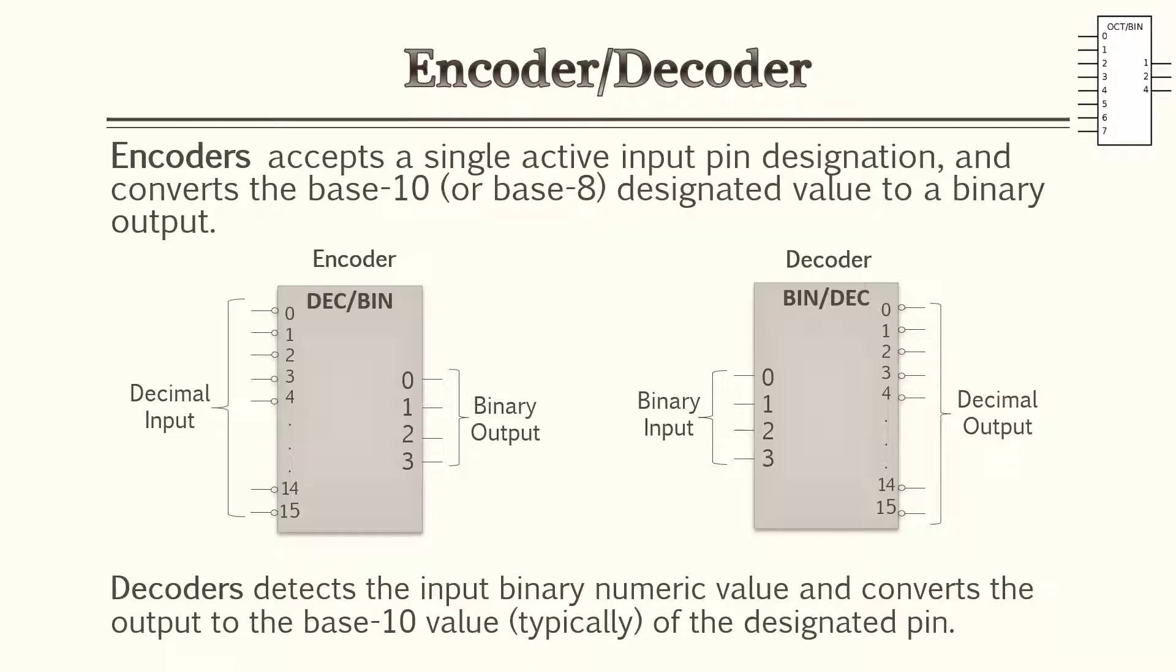If you look in the illustrations in the middle, we have an encoder and a decoder. An encoder has approximately 16 pins. And whichever pin that is, it's going to convert that number to a binary output. So if you have a pin which is say one active, it's going to give you a binary output of 0001. And a decoder will perform the opposite function. You input a binary input and get a single pin designated output.